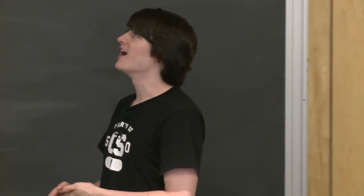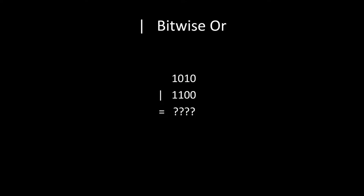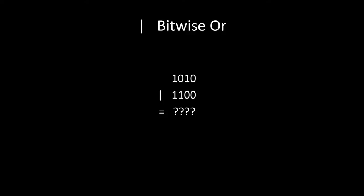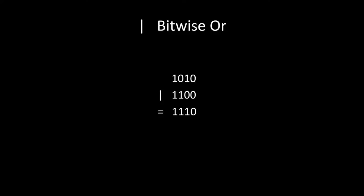Bitwise OR: comparing two binary numbers bit by bit, OR gives 1 if either bit is 1. So 1 OR 1 is 1, 0 OR 1 is 1, 1 OR 0 is 1, and 0 OR 0 is 0. The only case where you get 0 is 0 OR 0. You can think of it like logical OR: true OR true is true, true OR false is true, false OR true is true, and false OR false is the only thing that's false.